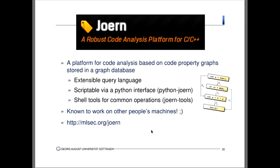We did all this and made it open source so you can play with it. This tool is called JOERN — the robust code analysis platform for C and C++. It's mostly C, but if you throw something like Firefox at it (which is nice C++), it will also work. But if you throw something like the STL into it, it will fail miserably. By definition, you get an extensible query language because you have Gremlin, and we provided a lot of different traversals — called pipes — that you can immediately use. It's scriptable via Python, and I also wrote shell utilities for day-to-day auditing work. It's known to work on other people's machines, which I'm very proud of.